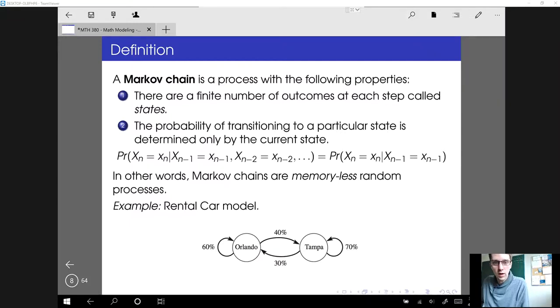All right, so in the last video we defined a Markov chain, and remember there were two properties. There must be a finite number of states in the system, and the transition probability, the probability of going from one state to the next, doesn't depend on where you were before, only where you are now. Any process that has those two properties can be represented by a Markov chain, and so we're going to now look at how we can describe that mathematically.